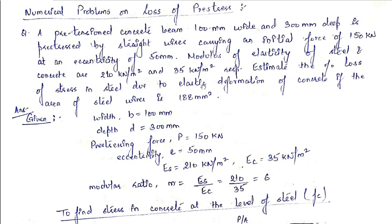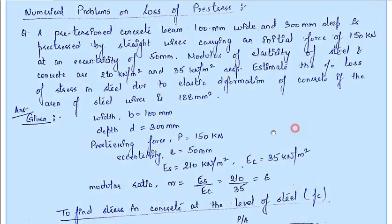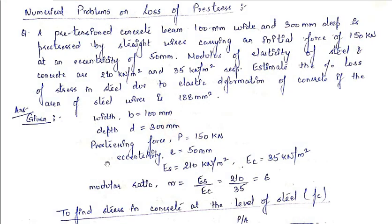In this question we have to find the percentage loss in steel due to elastic deformation. The given values are: width = 100 mm, depth = 300 mm, pre-stressing force P = 150 kN, eccentricity = 50 mm, Es = 210 kN/mm² and Ec = 35 kN/mm².